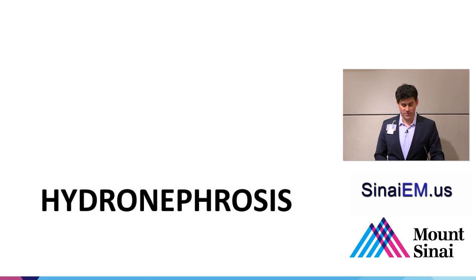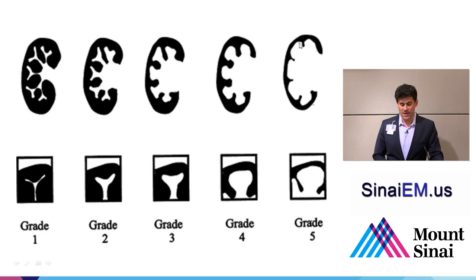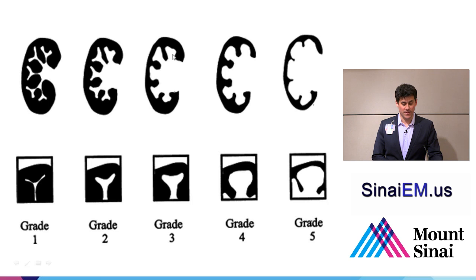The primary thing we're looking for is hydronephrosis, which is typically described subjectively from grade one — almost no hydronephrosis — to grade five, where the renal architecture is entirely obscured by the dilated collecting system. Basically mild, moderate, and severe hydro. The bear-claw shape of the inner collecting system dilates and spreads to obliterate the architecture, in contrast to a cyst.